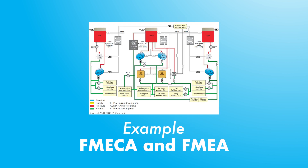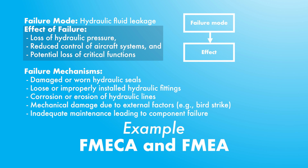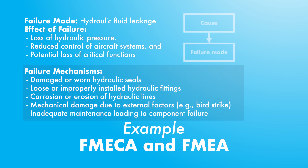Consider an example of a failure mode in an aircraft's hydraulic system. The failure mode is hydraulic fluid leakage, which can produce a series of effects such as loss of hydraulic pressure, reduced control of aircraft systems, and potential loss of critical functions. The mechanisms — or causes — of this failure mode include damaged or worn hydraulic seals, loose or improperly installed hydraulic fittings, and others.